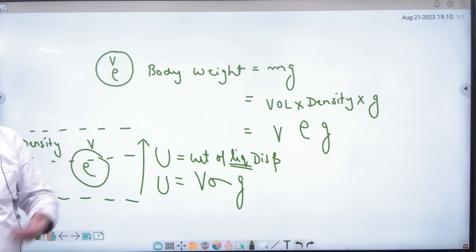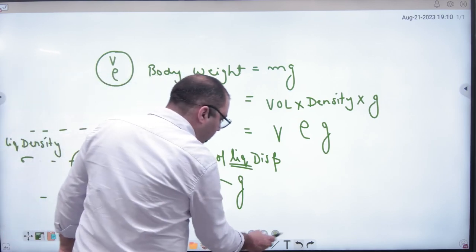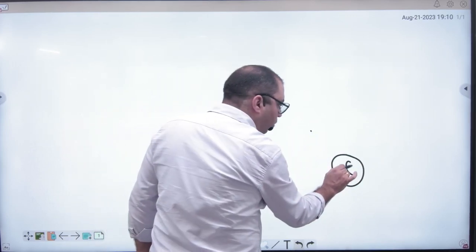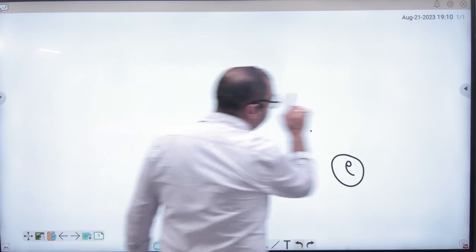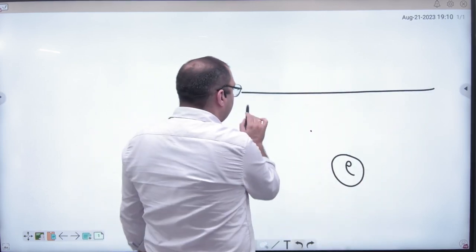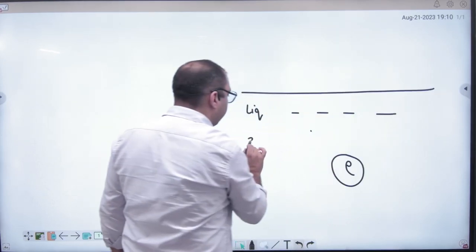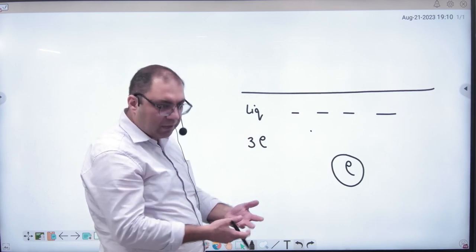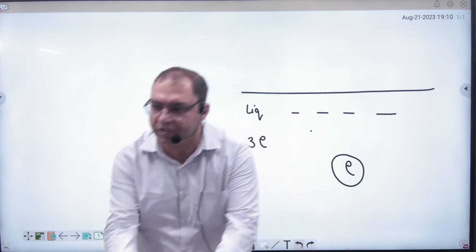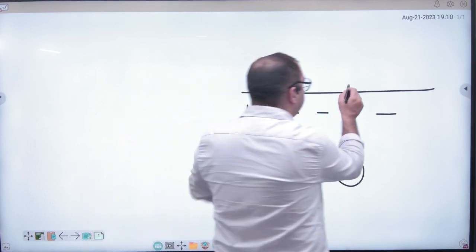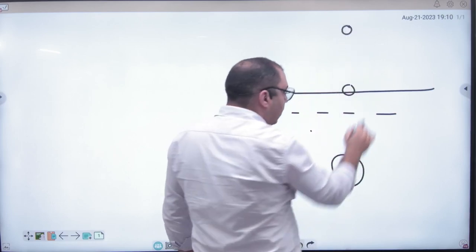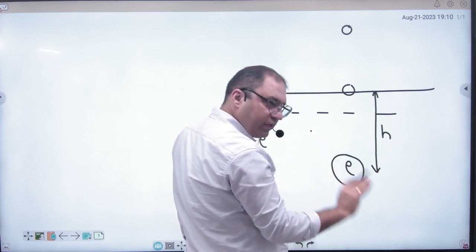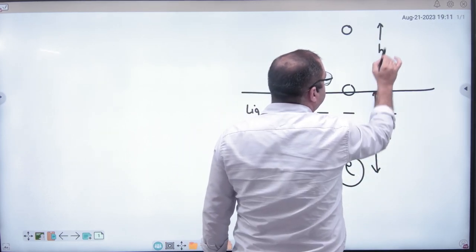Now suppose you have a body whose density is rho, and it is placed in a liquid whose density is 3 rho — which is much more dense. Imagine you take a plastic ball into a pool and release it from underwater. It comes out into the air. The depth in liquid is H (given), and we need to find how much height H' it reaches in the air.